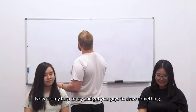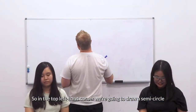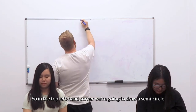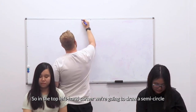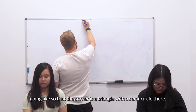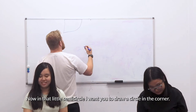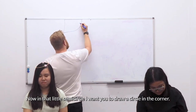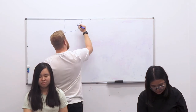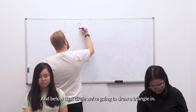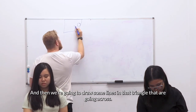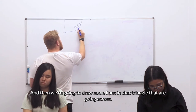Now it's my turn to try and get you guys to draw something. So in the top left-hand corner, we're going to draw a semi-circle, so that the corner's a triangle with a semi-circle there. Now in that little semi-circle, I want you to draw a circle in the corner. And below that circle, we're going to draw a triangle. And then we're going to draw some lines in that triangle that are going across.